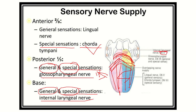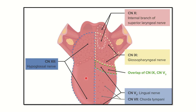To summarize: for the anterior two-thirds of the tongue, taste is carried by the chorda tympani of the facial nerve and general sensation by the lingual nerve, branched from the mandibular nerve of the trigeminal nerve. For the posterior one-third, both general and taste sensation are supplied by the glossopharyngeal nerve. For the extreme posterior or base, it is the internal laryngeal branch of the vagus nerve.